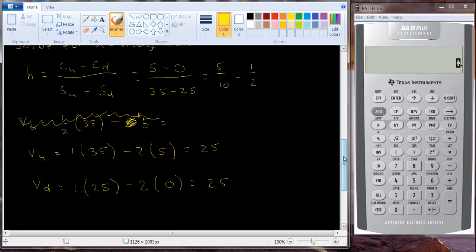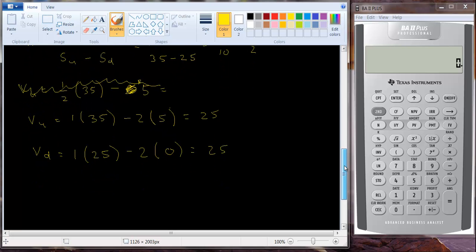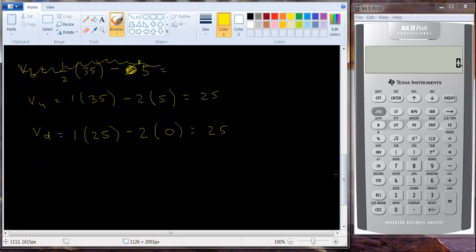Well, if it's a riskless portfolio it ought to return the riskless rate of return. So, we can now solve for the value of the call option. Because the value of the portfolio at the beginning of the period times one plus the interest rate, the risk free interest rate with a little F subscript so that we know it's risk free, has to equal the value in the up state or the value in the down state. They're going to be the same.